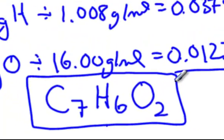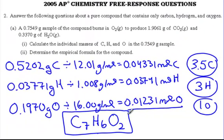Worth one more point. So this problem number two, A, is worth five total points. Three points for the individual masses of carbon, hydrogen, and oxygen. One point for finding my moles of carbon, hydrogen, and oxygen. And one point for finding the empirical formula.